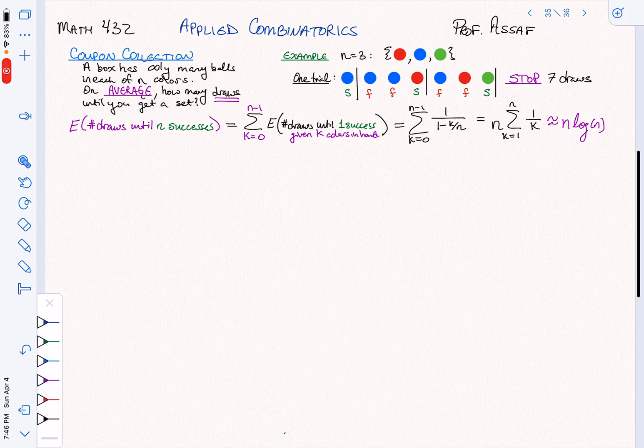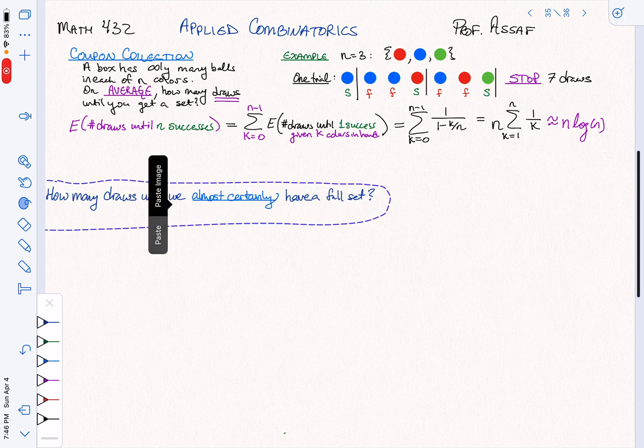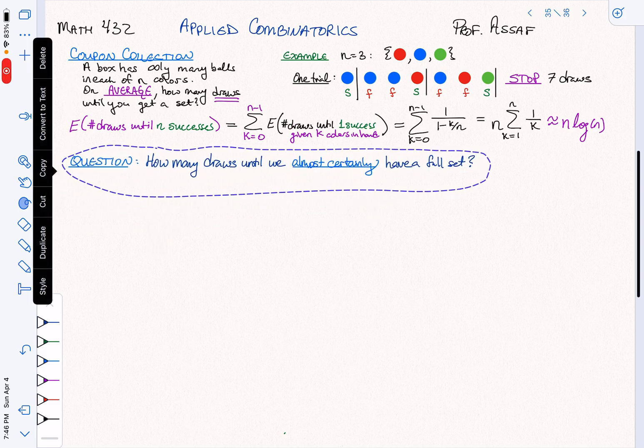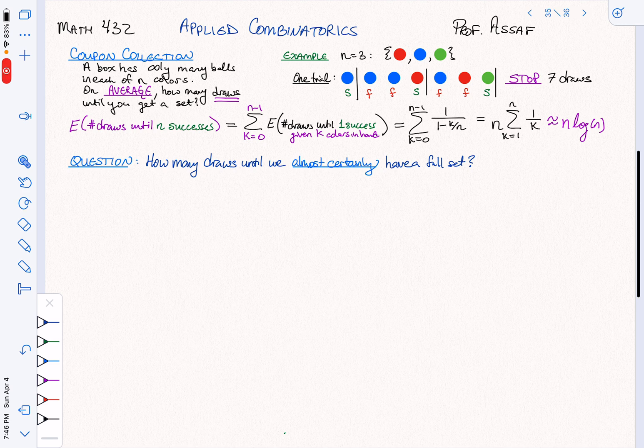We're going to ask a slightly different question next: How many draws until I almost certainly have a full set? This is a different question. I'm not saying what's the average. I'm not saying a million people are going to draw these and what's the average length of time it takes. I'm saying I really want a set. How many balls do I have to draw so that I almost certainly get a set?